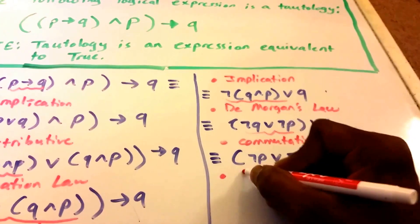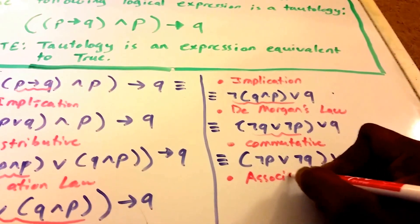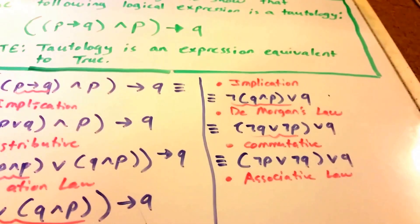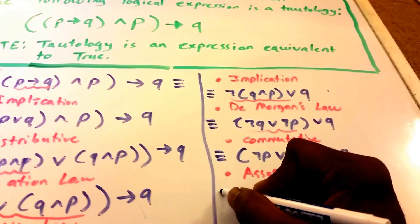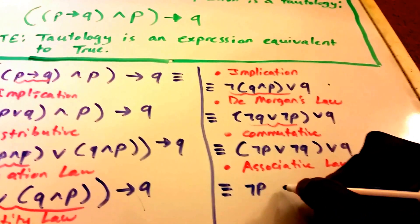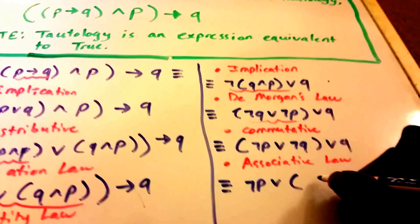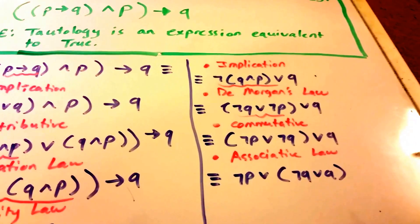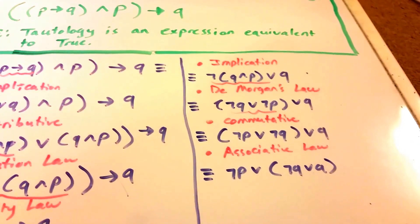So next up we want to use the associative law. And this right here will give us not P or not Q or Q.